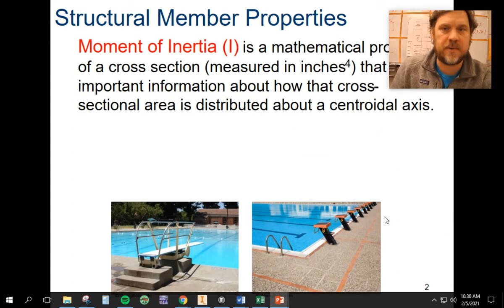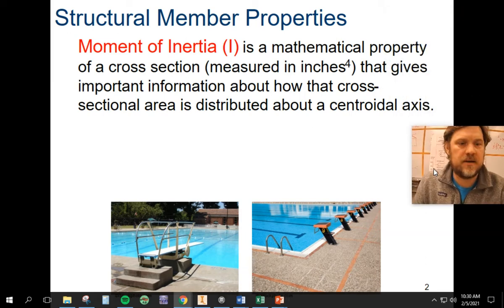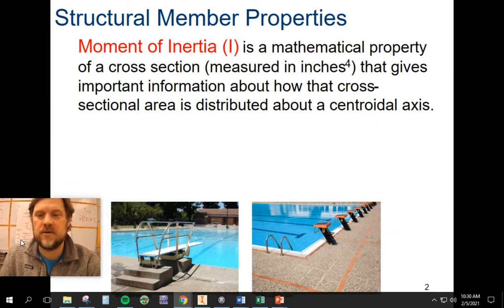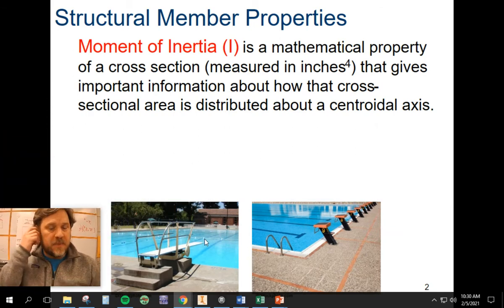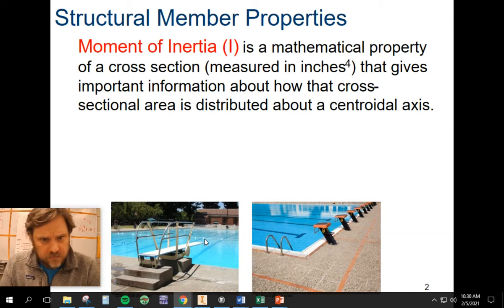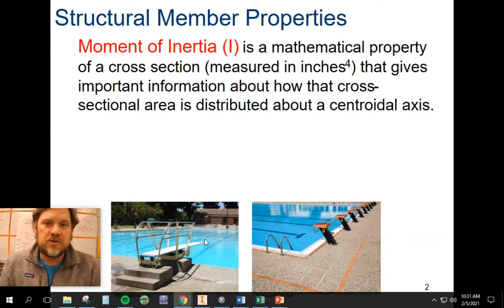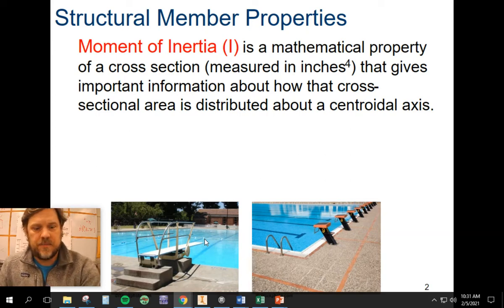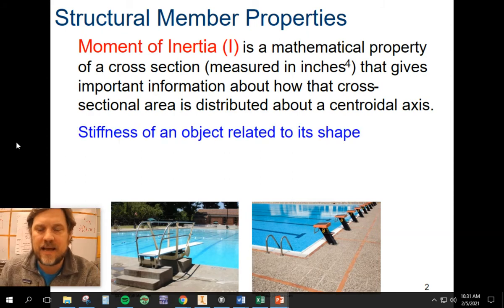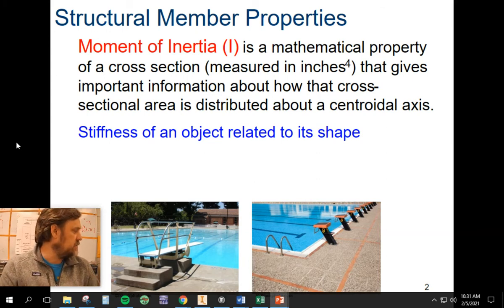The first thing that we're going to talk about is this idea of moment of inertia. We'll use that capital letter I for that. Notice that it's going to be in inches to the fourth. So don't think when you're putting that in your calculator that you're going to do to the fourth power. It's just like inches cubed or inches squared, just inches to the fourth. What we know about the moment of inertia is it's going to be based on that material's cross-sectional area. That means that it has to do with an object shape. So the stiffness of an object due to its shape.